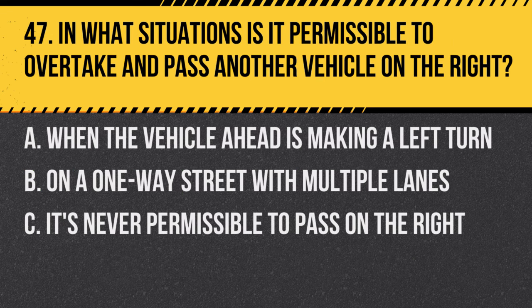Question 47. In what situations is it permissible to overtake and pass another vehicle on the right? A. When the vehicle ahead is making a left turn. B. On a one-way street with multiple lanes. C. It's never permissible to pass on the right. Answer: A. When the vehicle ahead is making a left turn. It is permissible to pass on the right if the vehicle you are passing is making a left turn and there is room to pass safely.